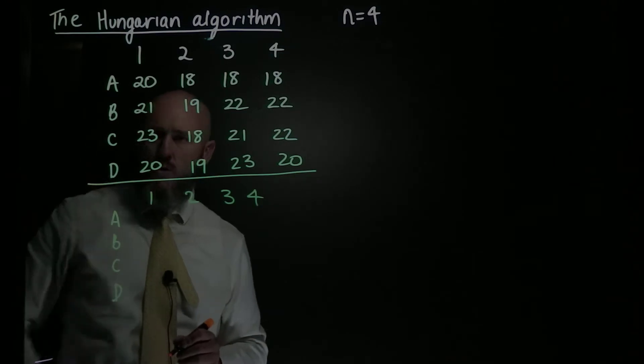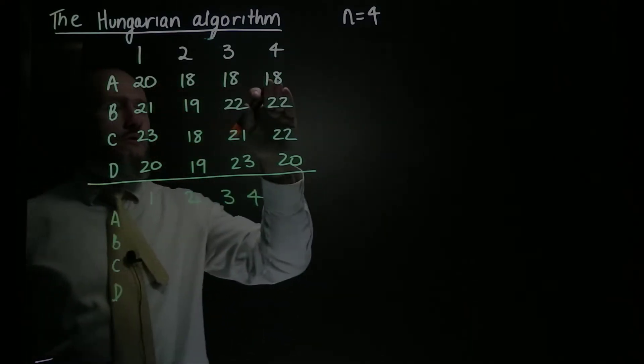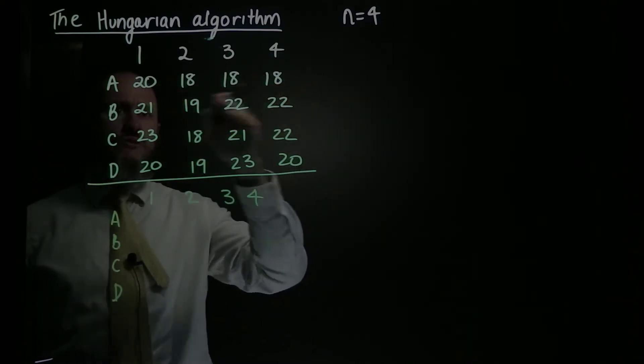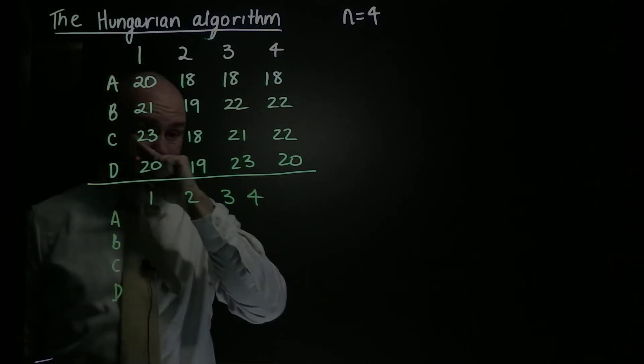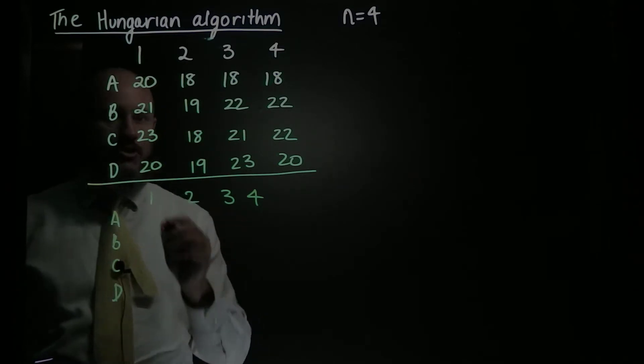So first we have to do a row reduction, step one. We look at each row, we find our minimum in each row, we subtract it from each other value and itself, and we'll set it up with at least one zero in every row, and then we're going to have a look at a column reduction in step two.